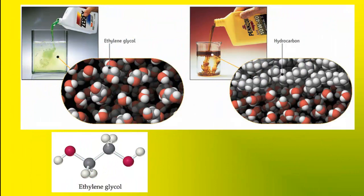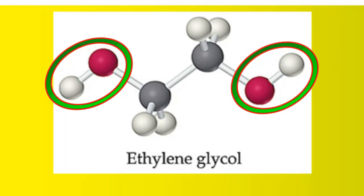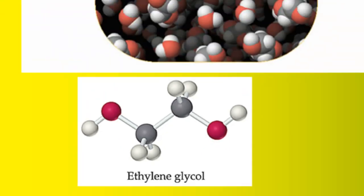Here's a cartoon showing ethylene glycol molecules in the liquid state. Ethylene glycol is a polar molecule. It has two OH groups at opposite ends of the molecule. This molecule engages in hydrogen bonding.